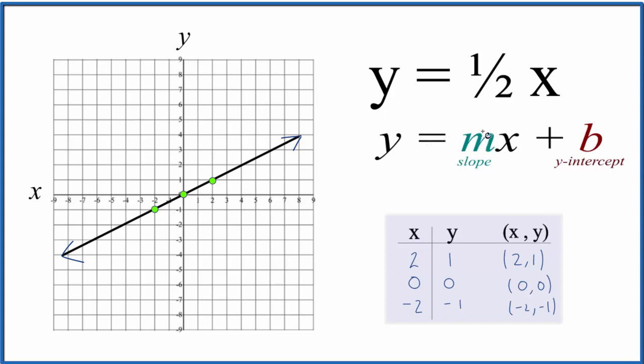We can think of our slope, m, the one-half, as rise over run. And that way, we can go to our y-intercept right here at zero on the y-axis. We'll go up one and over one, two. That's our first point. From there, we go up one and over one, two.